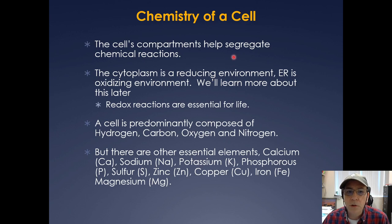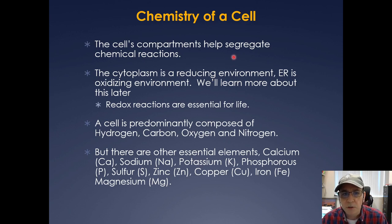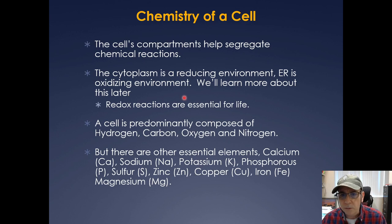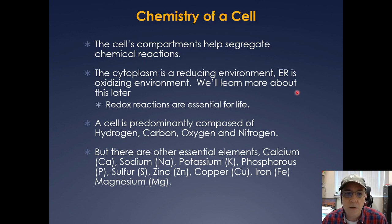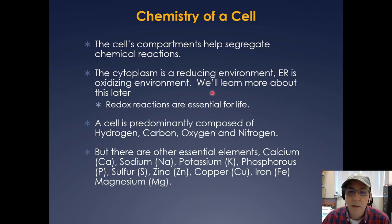To begin, we saw last time that cells actually have a lot of different compartments — the ER, the Golgi — and these compartments help segregate chemical reactions. In its most basic form, the cytoplasm is a reducing environment, making it very hard for certain bonds to form, versus the ER, which is actually an oxidizing environment. We'll learn more about this when covering transport through the ER and Golgi.